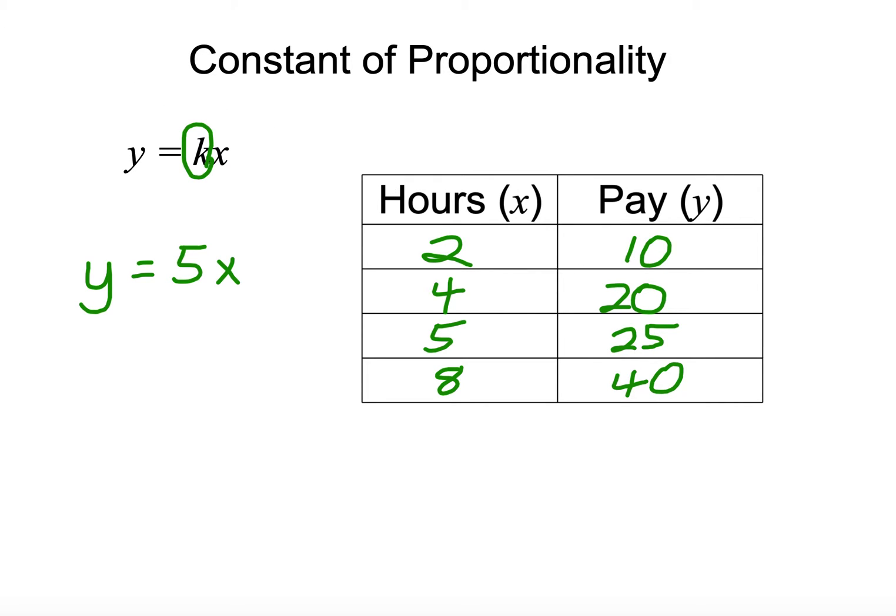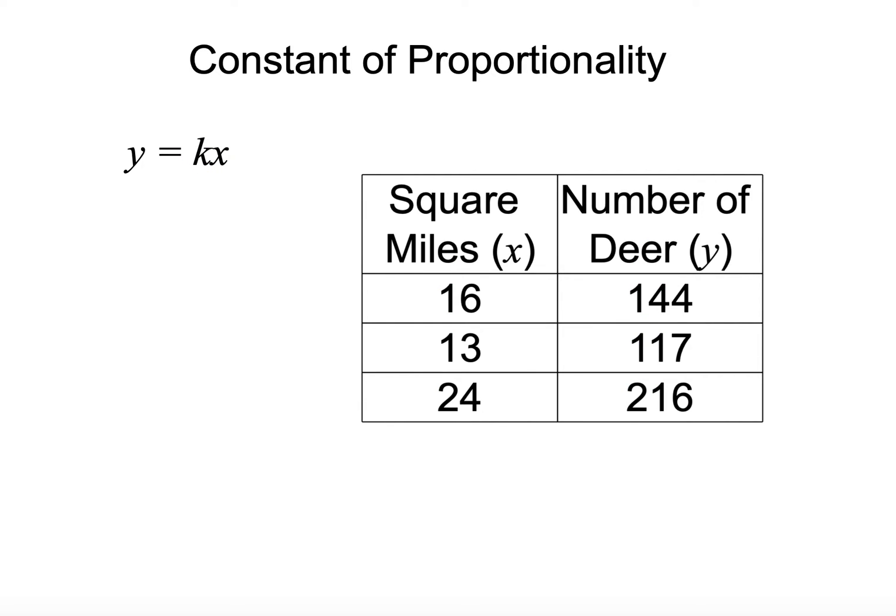Now, you're going to be asked to find that constant, or that k. So here's an example. We've got the number of deer that have been seen, and the number of square miles they were seen in. Now, if we did this experiment in real life, it wouldn't work out perfectly. But for math's sake, let's say it works out perfectly, nice and square in even numbers.